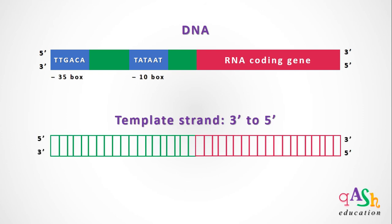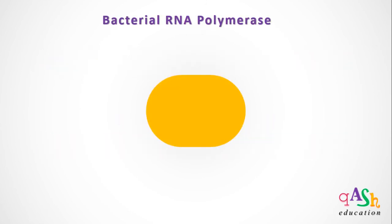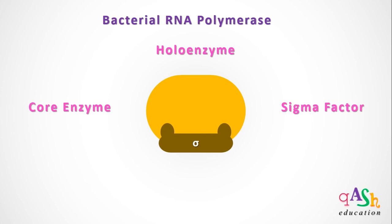The template strand used for mRNA synthesis or transcription is from 3' to 5'. The bacterial RNA polymerase that synthesizes the mRNA is a holoenzyme. It is made up of a core enzyme and sigma factor. The core enzyme itself is made up of 4 subunits: 2 alpha subunits, 1 beta and a beta dash subunit.